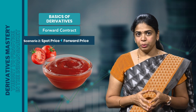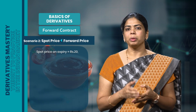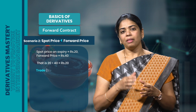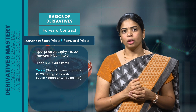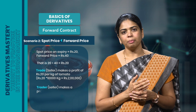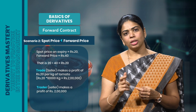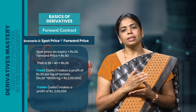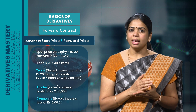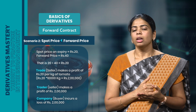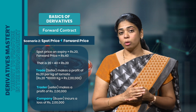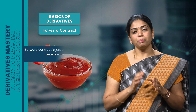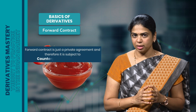Now let's consider the second scenario. What if the spot price on expiry is Rs 20 per kg? In this case, the spot price is lesser than the agreed price, and therefore the seller gets benefited. Though the tomatoes are selling at Rs 20 in the market, the trader will be able to sell 10,000 kgs at Rs 40 per kg as per the forward agreement. Thus the trader earns a profit of Rs 2,00,000, and the same is a loss for the ketchup company. Now, what if the company refuses to fulfil its obligation? Remember, a forward contract is just a private agreement and therefore it is subject to counterparty risk or default risk — there is no mediator to ensure that both parties fulfil their obligations.